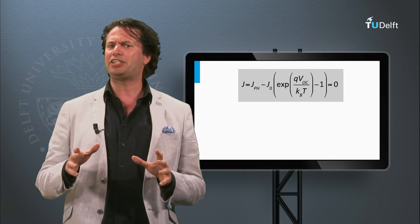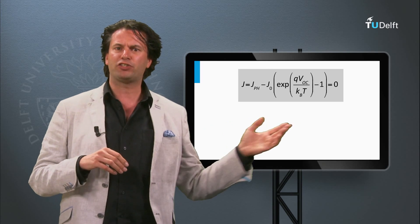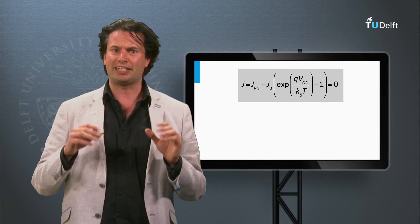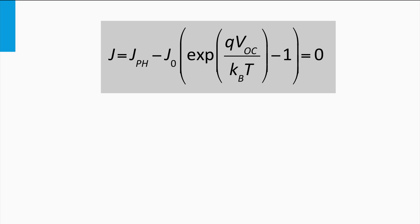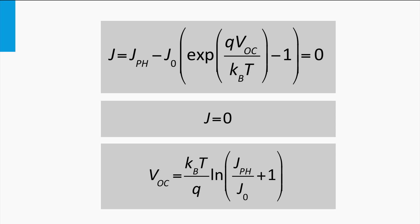We can derive a simple equation for the open circuit voltage of an ideal solar cell. In the previous block we derived an expression for the current density which had two components: the photocurrent generated by the light-excited charge carriers, and the typical JV characteristic of a diode in the dark. Under open circuit conditions the current density J equals zero, and solving this equation gives a simple expression for the open circuit voltage. It is linear with the Boltzmann constant times temperature divided by the electron charge, and linear with the natural logarithm of the ratio between the photocurrent and the diode leakage current plus one.